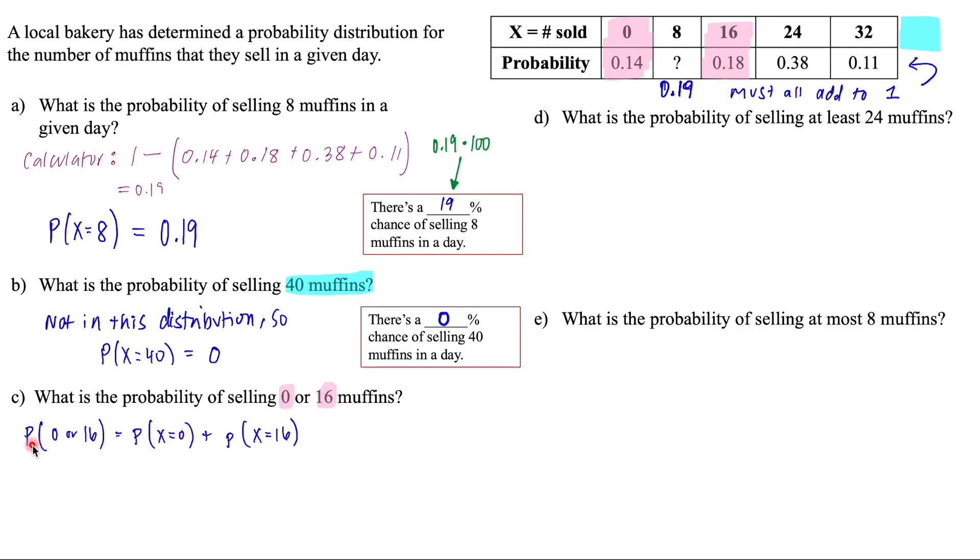So my notation over here is the probability that it's zero or 16 is equal to us adding up the probability that it's zero and adding up the probability that it's 16.